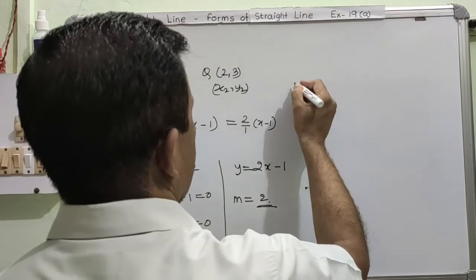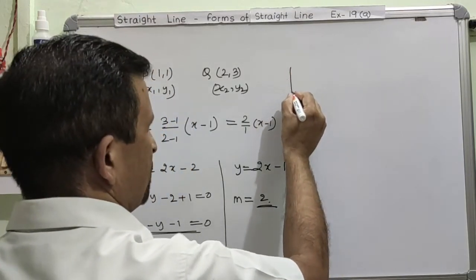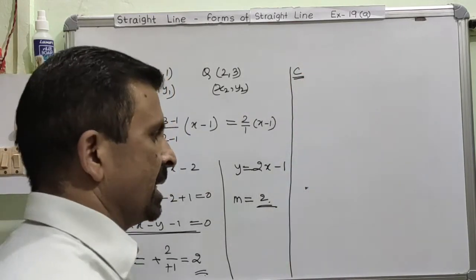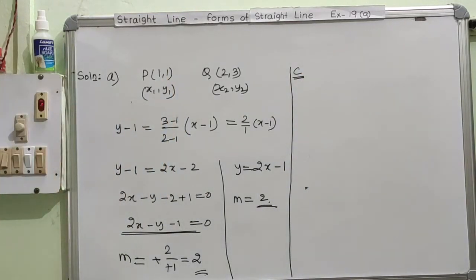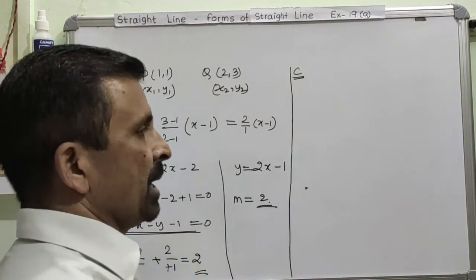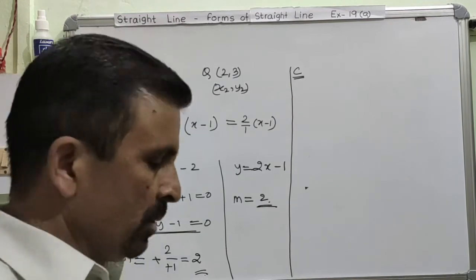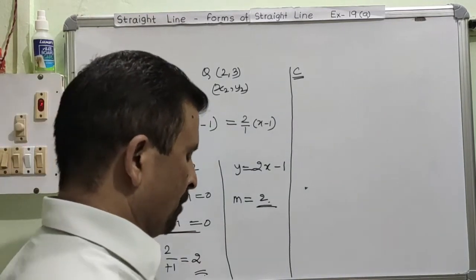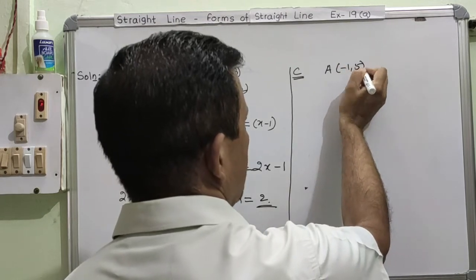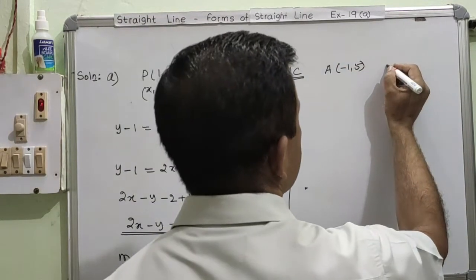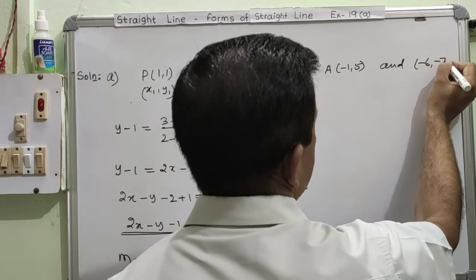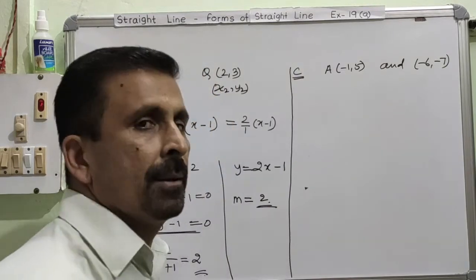Now we take question number 9, part C. We need to find the slope of a line which is parallel to the line joining two given points. Point A is (-1, 5) and the other point is (-6, -7).